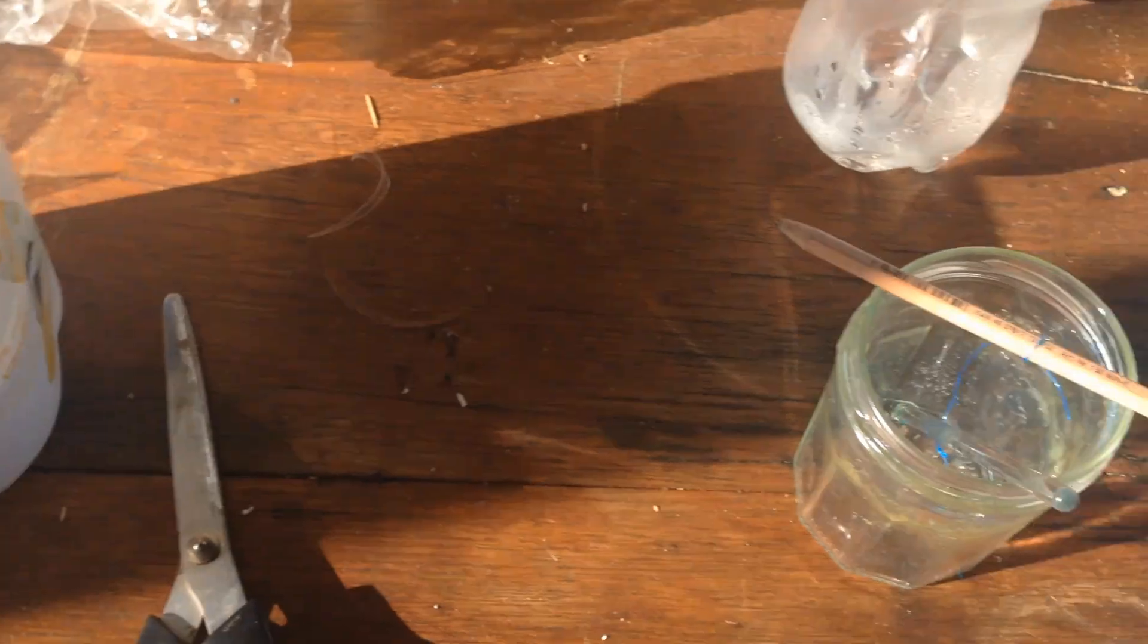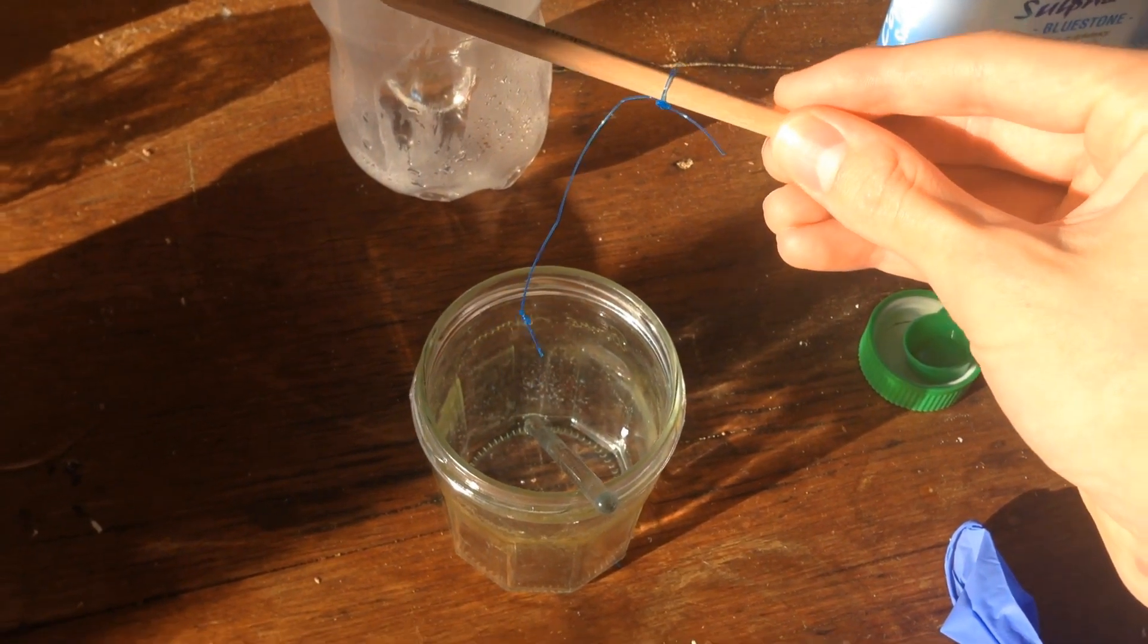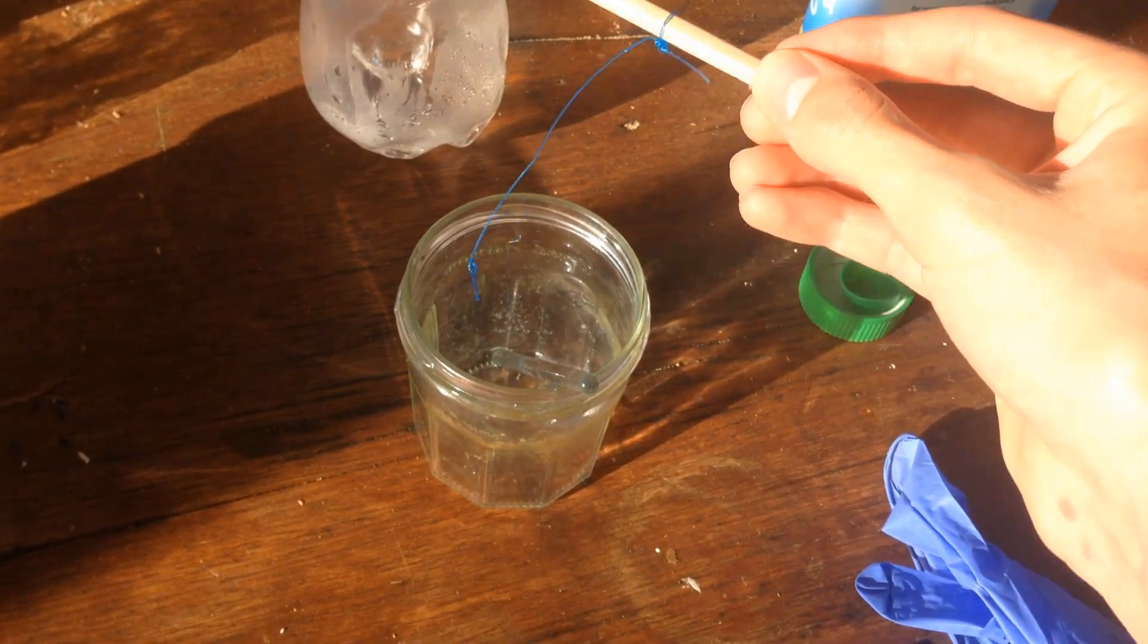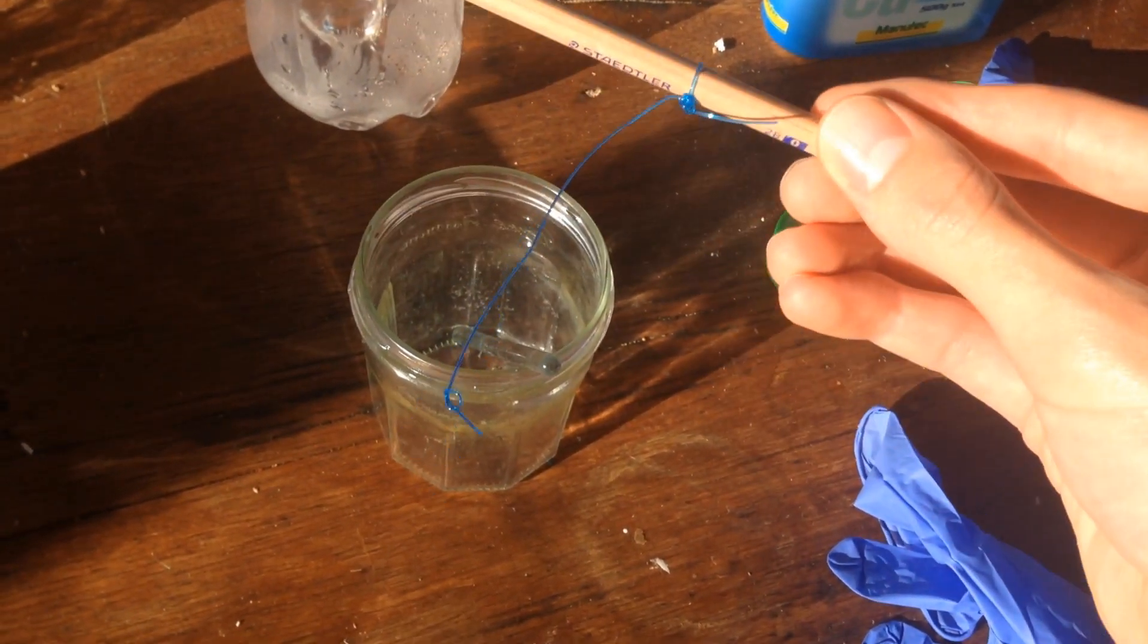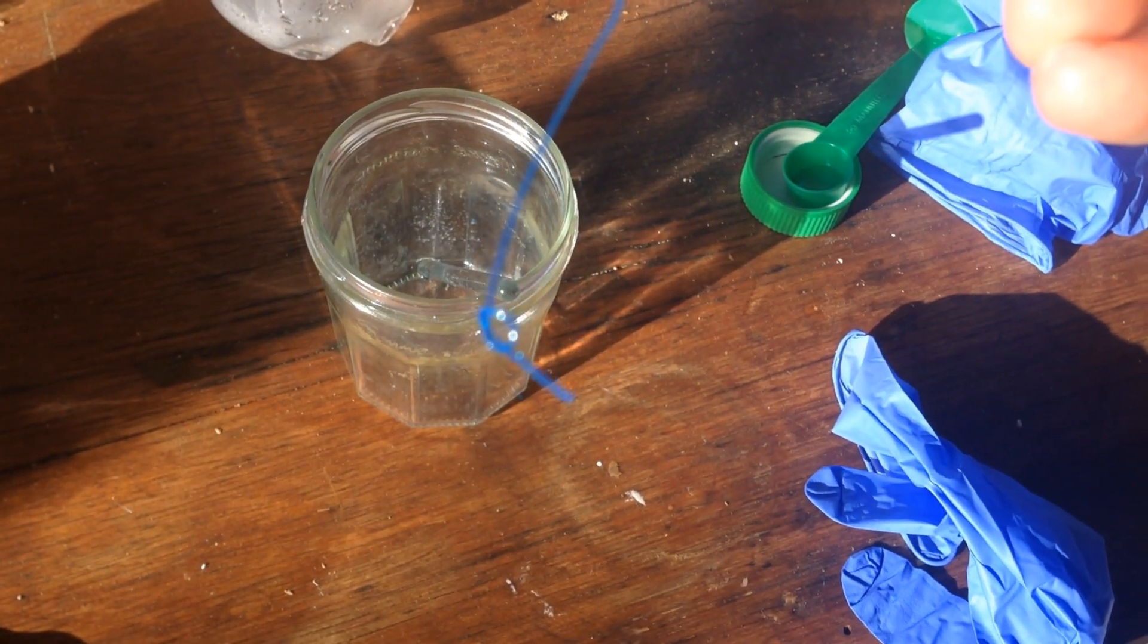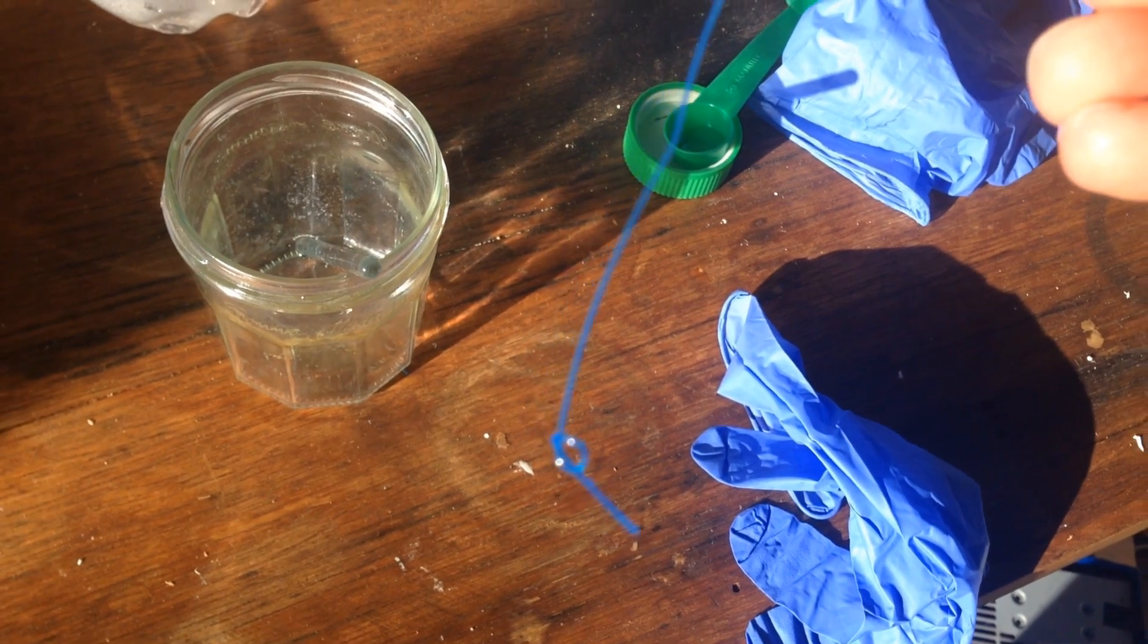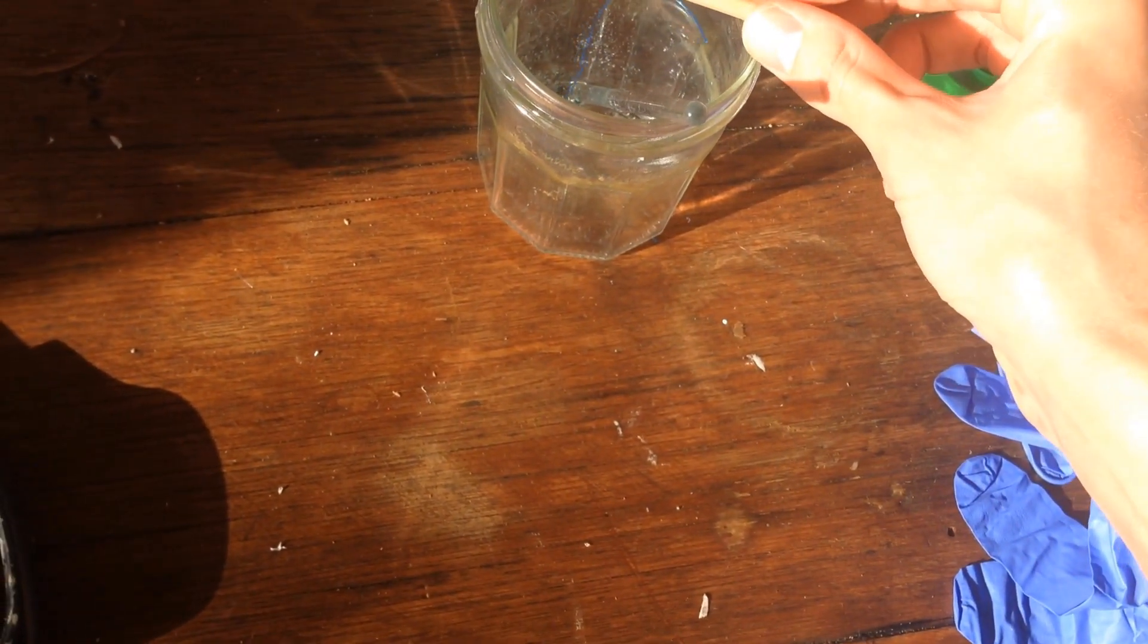While that's cooling down, you can get your pencil and some fishing line. You can see I've got blue fishing line, that's quite handy for when we're going to cut off the crystal. But you can get your fishing line and tie it around your pencil and make a little knot at the end, so that you can suspend your little seed crystal within the solution that we're going to put in this little glass jar.